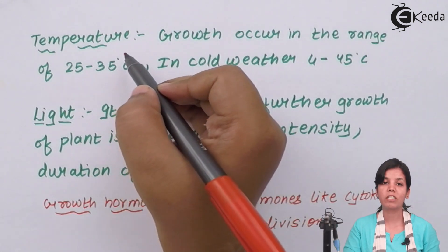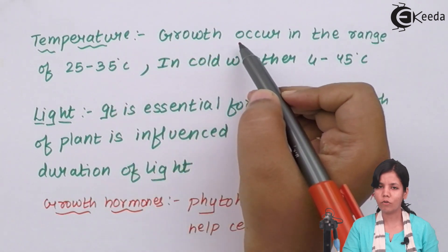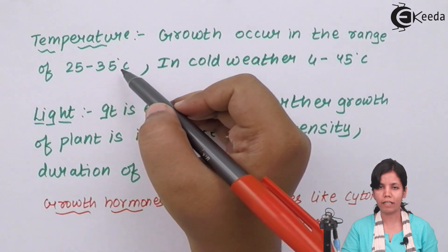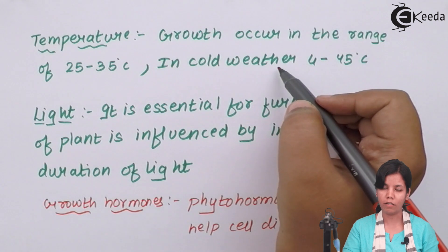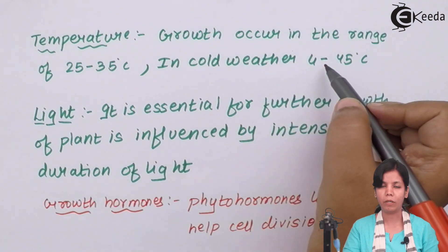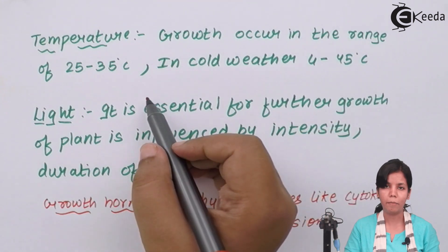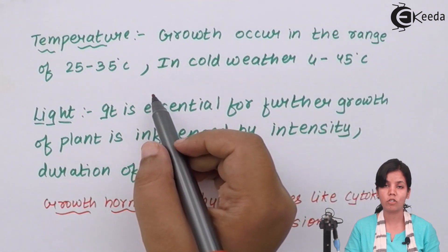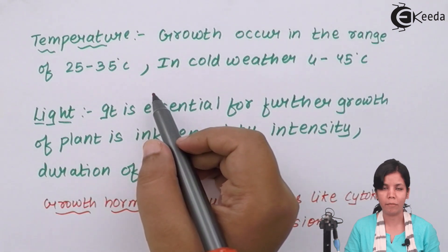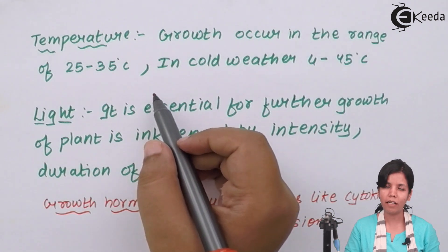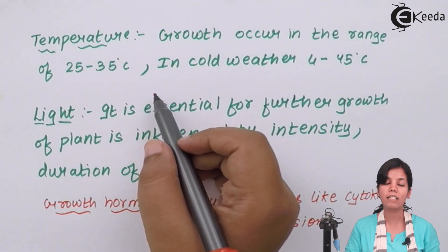The next factors which affect plant growth are temperature. Growth occurs in the range of 25 to 35 degrees Celsius in temperate climate, but if you grow in cold weather the temperature can lie between 4 to 45 degrees Celsius depending upon the plant. For example, in Rajasthan the temperature would touch above 30 degrees Celsius and cactus is fine with that temperature, but when you grow an apple in Kashmir it cannot survive in 35 degrees Celsius temperature, it needs lower temperature.